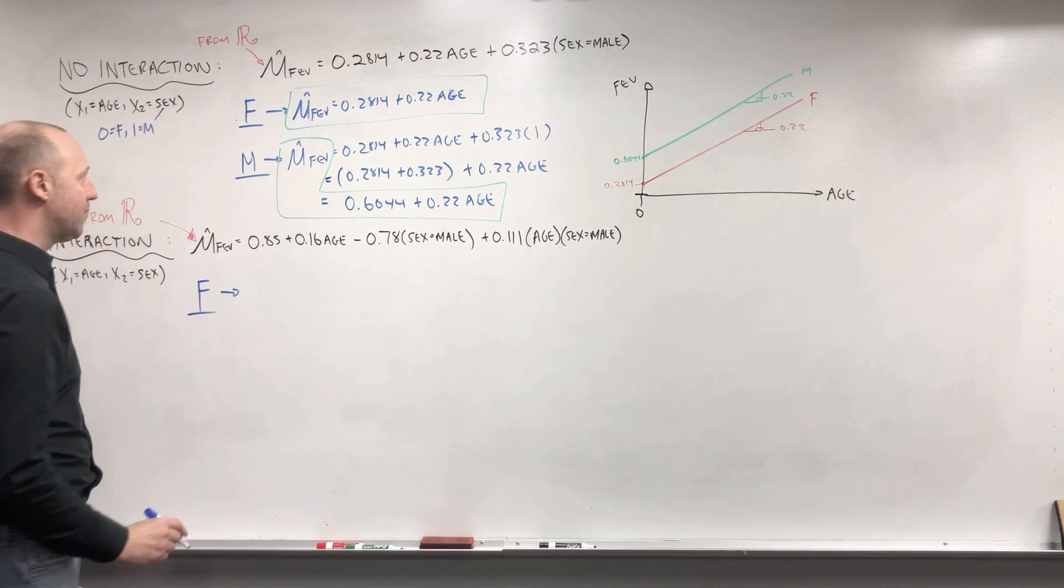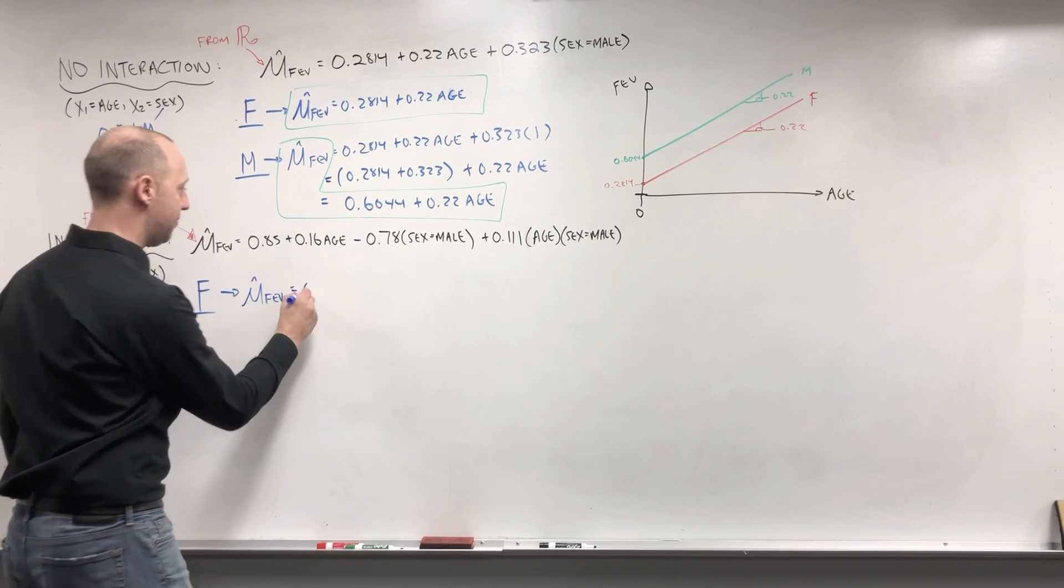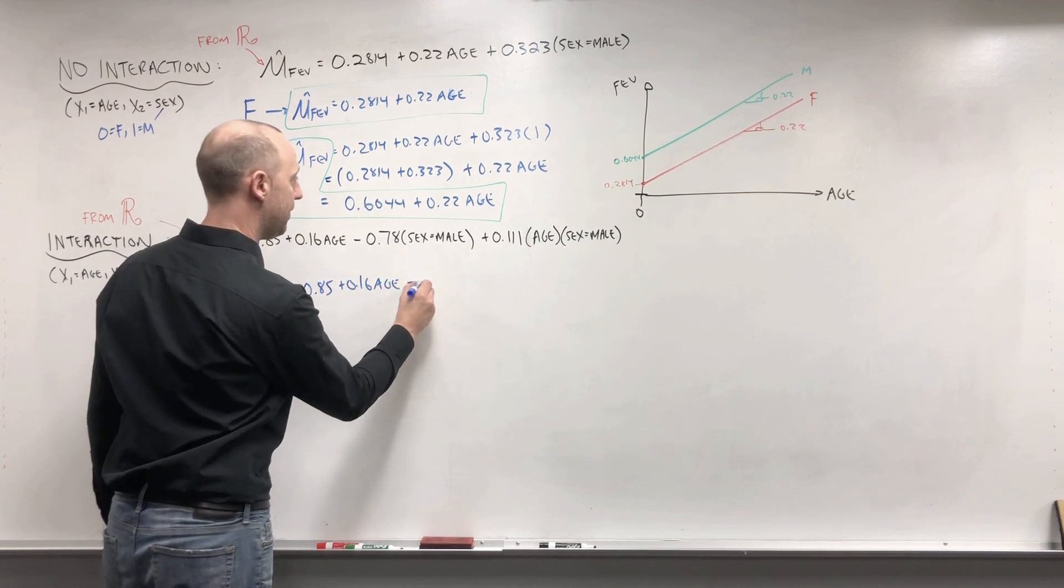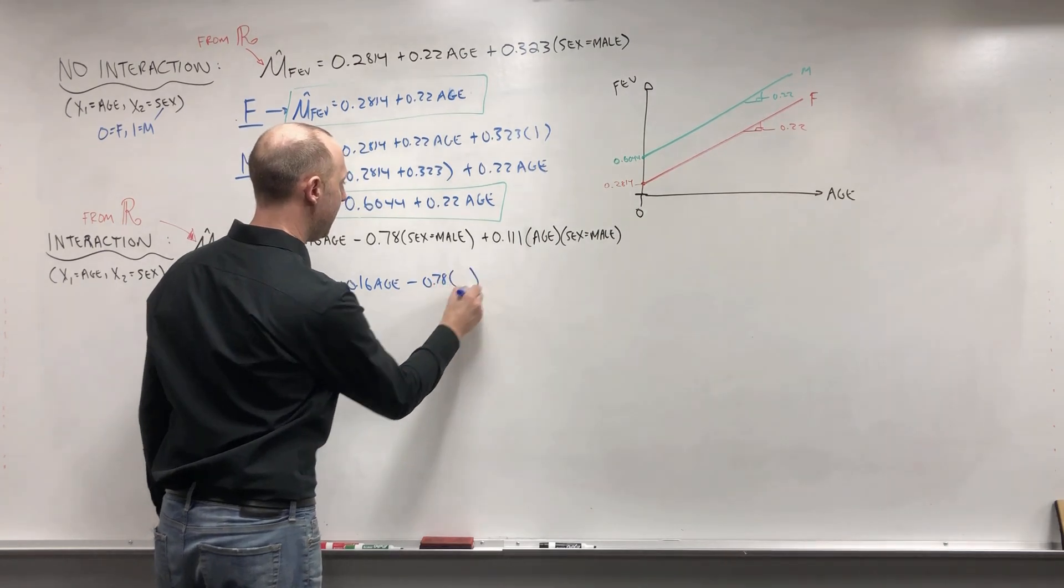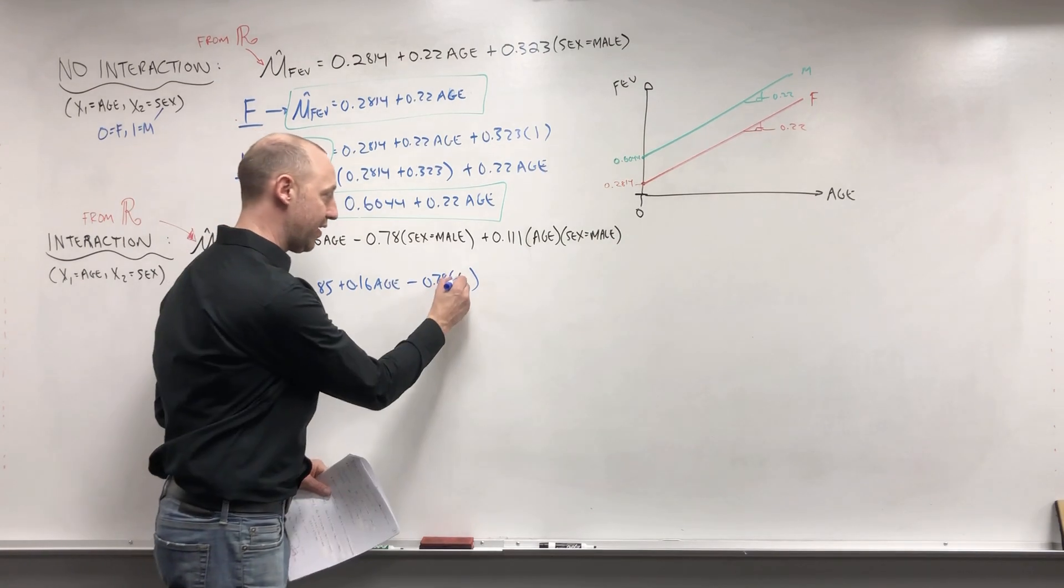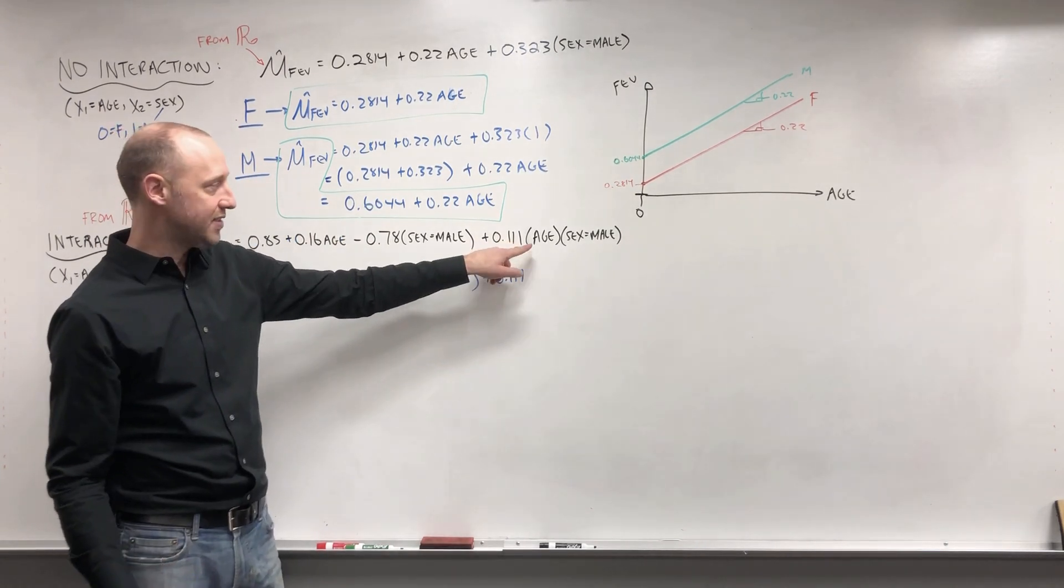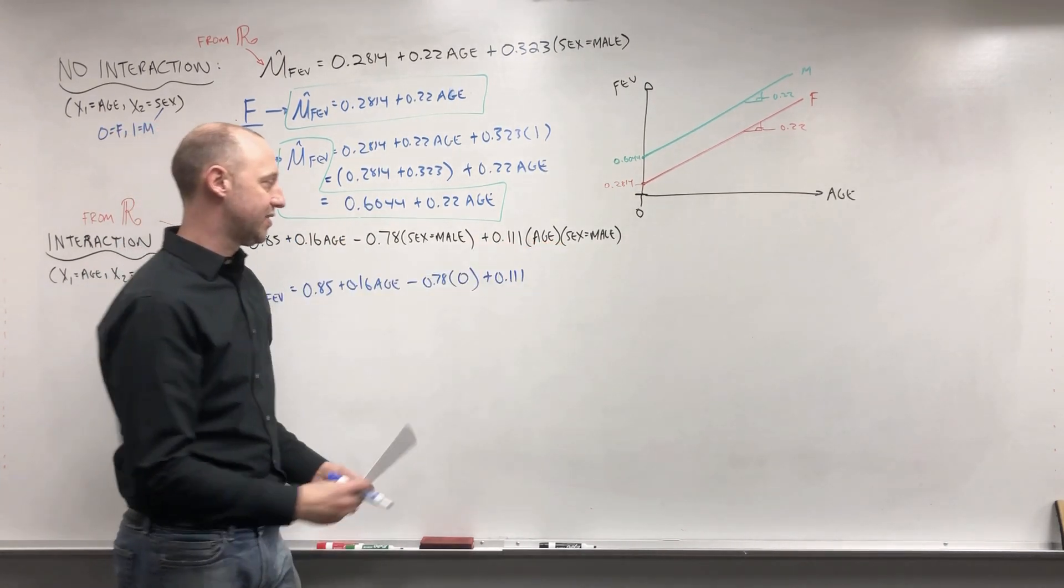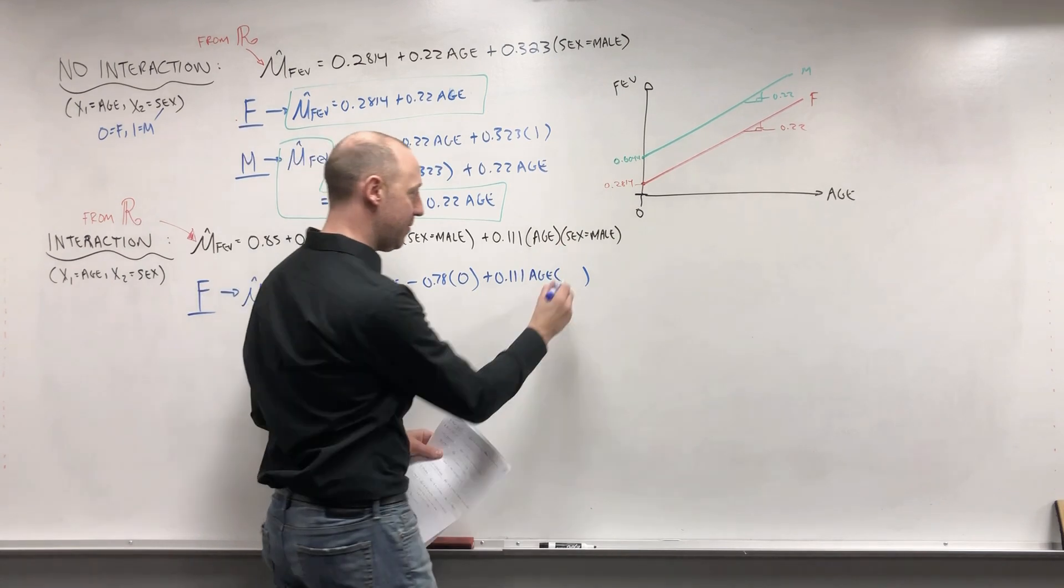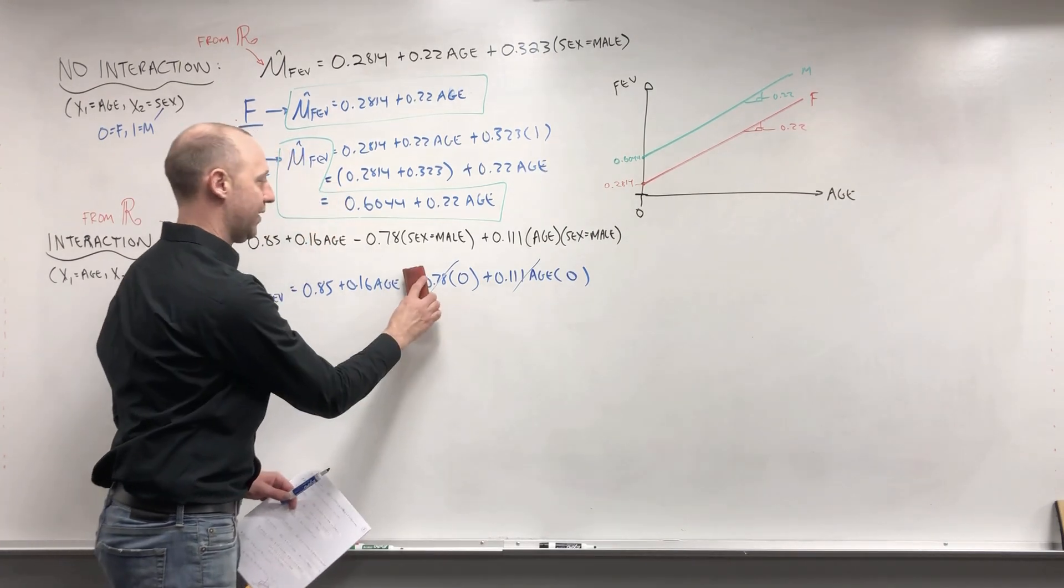And if we worked out the model for females, the mean FEV is 0.85 plus 0.16 times the age minus 0.78, an indicator if sex is male. Since they're female, this is going to take on a value of zero. Plus 0.111, so this is the interaction term. This is how the age effect changes for males. Times age times the indicator if sex is male. We're looking at females, so this is 0. So both of these terms are going to disappear. So I'll just erase them.